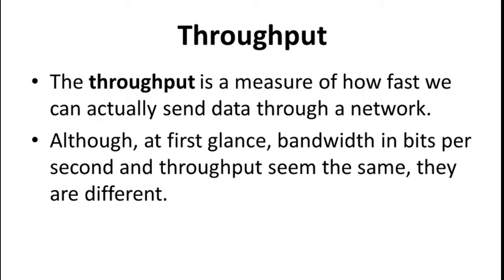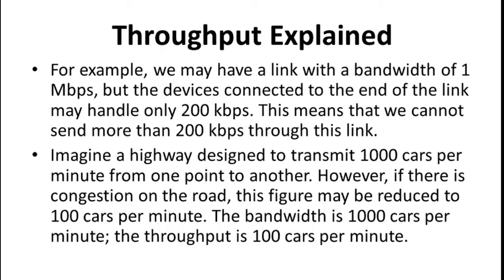Now, how do we calculate throughput with this idea of bandwidth? Throughput is the measure of how fast we can actually send data through the network. Although at first glance bandwidth in bits per second and throughput seem to be the same, they are different. For example, we may have a link with a bandwidth of 1 Mbps, but the devices connected to the end of the link may handle only 200 Kbps. This means we cannot send more than 200 Kbps, so 200 Kbps becomes the throughput whereas 1 Mbps is the bandwidth.